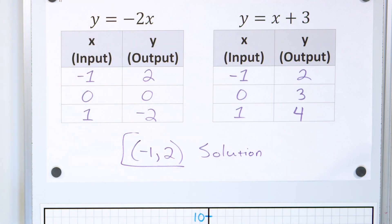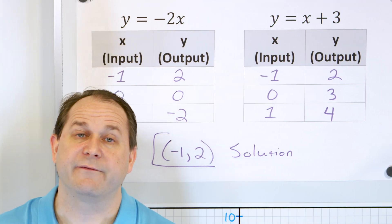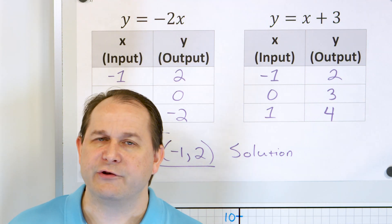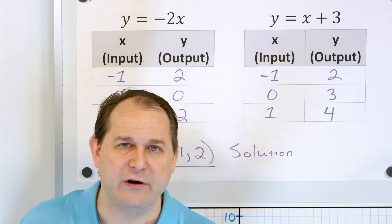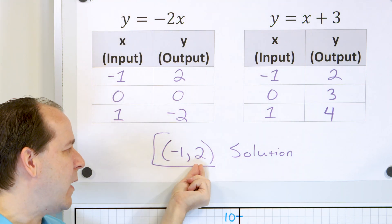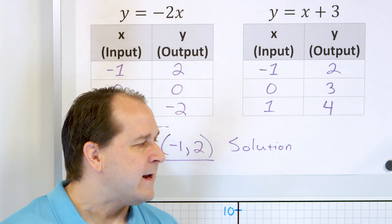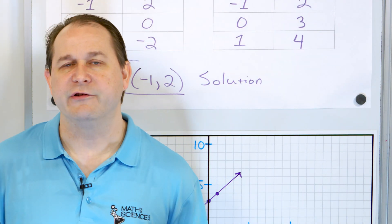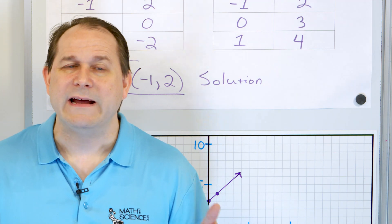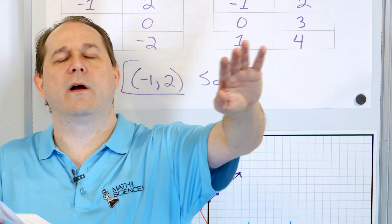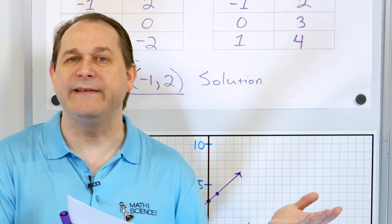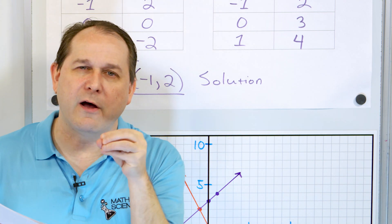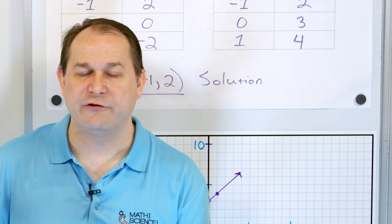I want you to think about this from the big picture. When we solve a regular equation like 2 plus 3 equals x, you're just getting a single value for x. But when you have a system of equations, you don't just get a single value for x — you get an x and a y number, and they form a coordinate pair, but it's still a single point. These lines crossed at one point, so there's going to be one solution. The only time you won't have a solution is if the lines are totally parallel and they never cross.